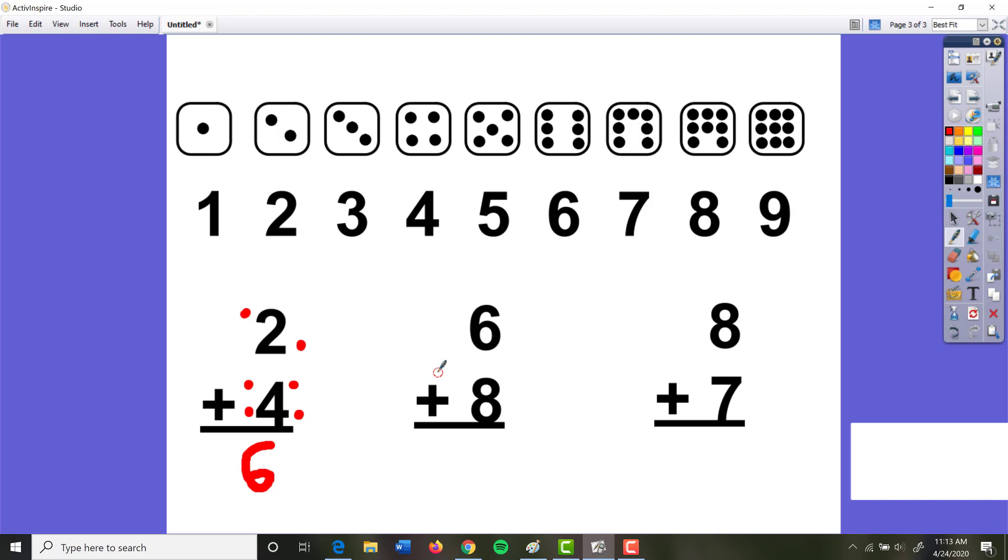Now that takes time, I know. It's a lot slower than if you can just memorize that 4 plus 2 is 6. But if you can't, at least this gives you a way to get the answer. Because if you guess, you're going to get it wrong. And in math, really, it's more important to be right than to be fast.